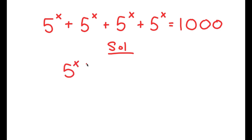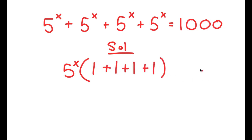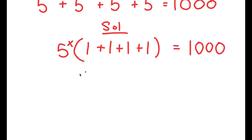So I get 5 to the power of x times — well, 5 to the power of x divided by 5 to the power of x is simply 1 — so I get 1 plus 1 plus 1 plus 1 is equal to 1000. And now, 1 plus 1 plus 1 plus 1 is 4, so I get 5 to the power of x times 4 is equal to 1000.